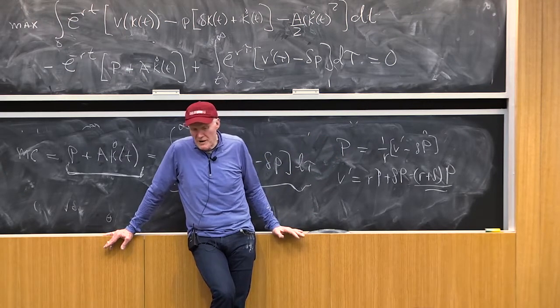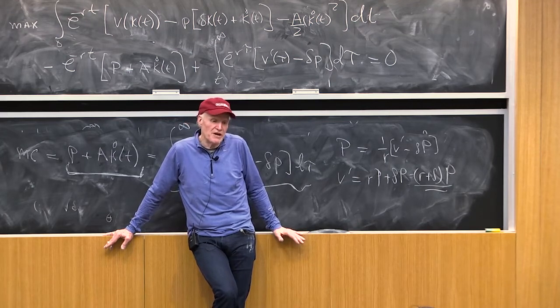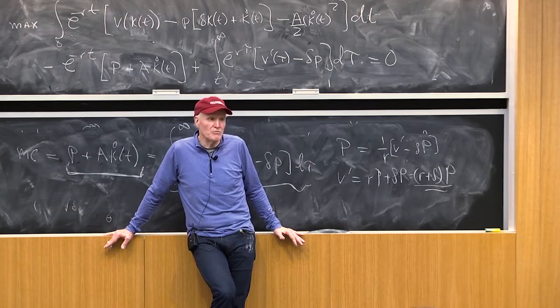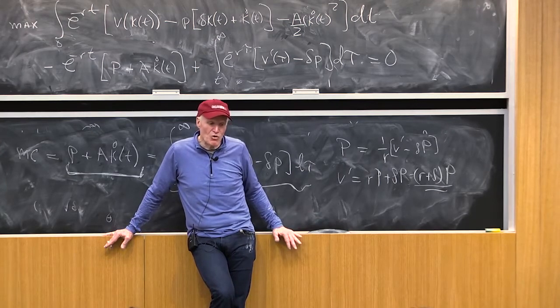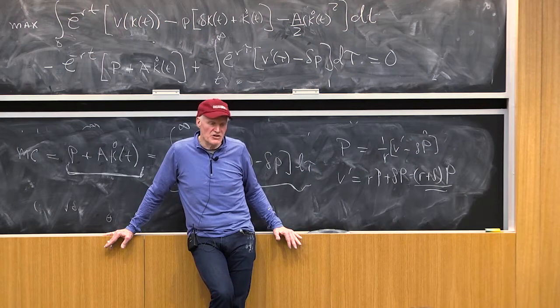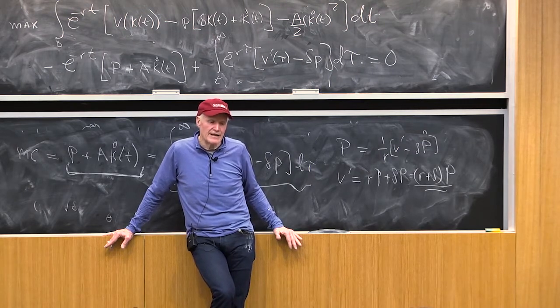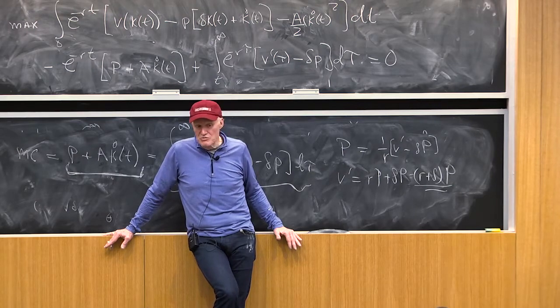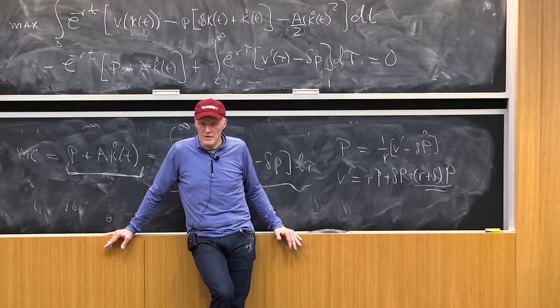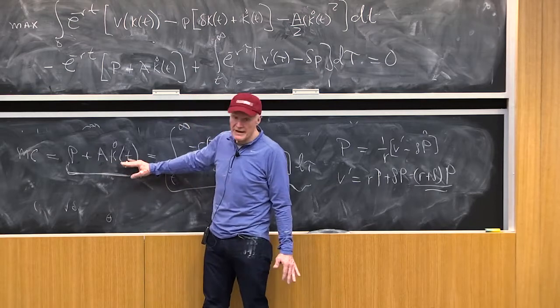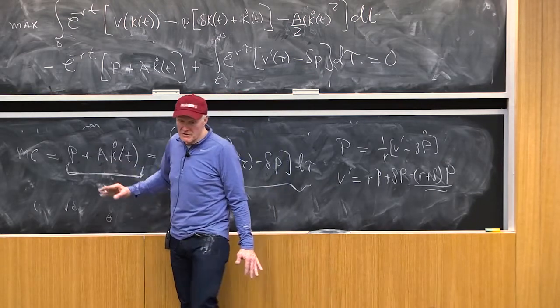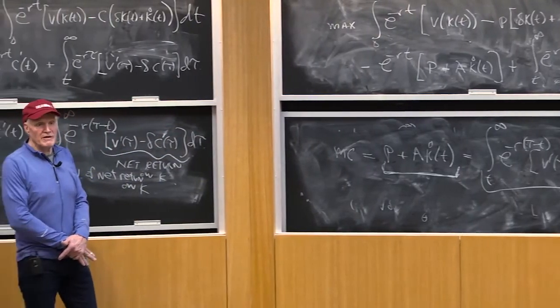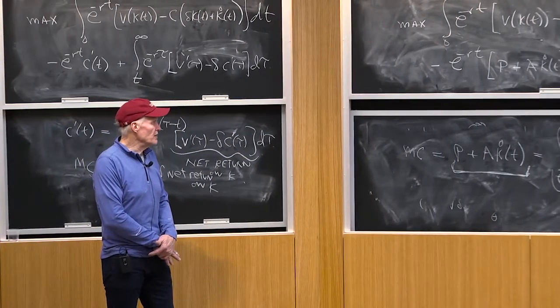The first model had a rising supply price of gross investment, so if I wanted to invest more temporarily or permanently, it was going to cost more. This one has a rising supply price only of net investment. The adjustment costs are a function of k dot, not k dot plus delta k. But the dynamics of these two models look very similar because they both have this rising supply of k dot. If you want to increase k dot, it's better to do it slowly to have lower total cost.